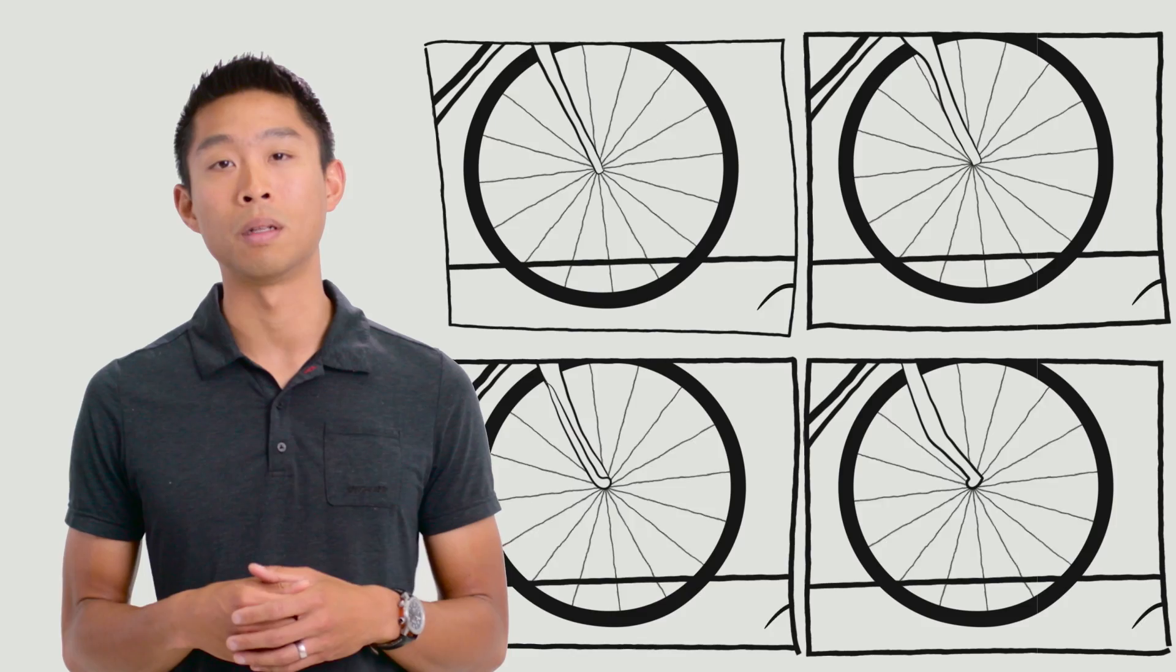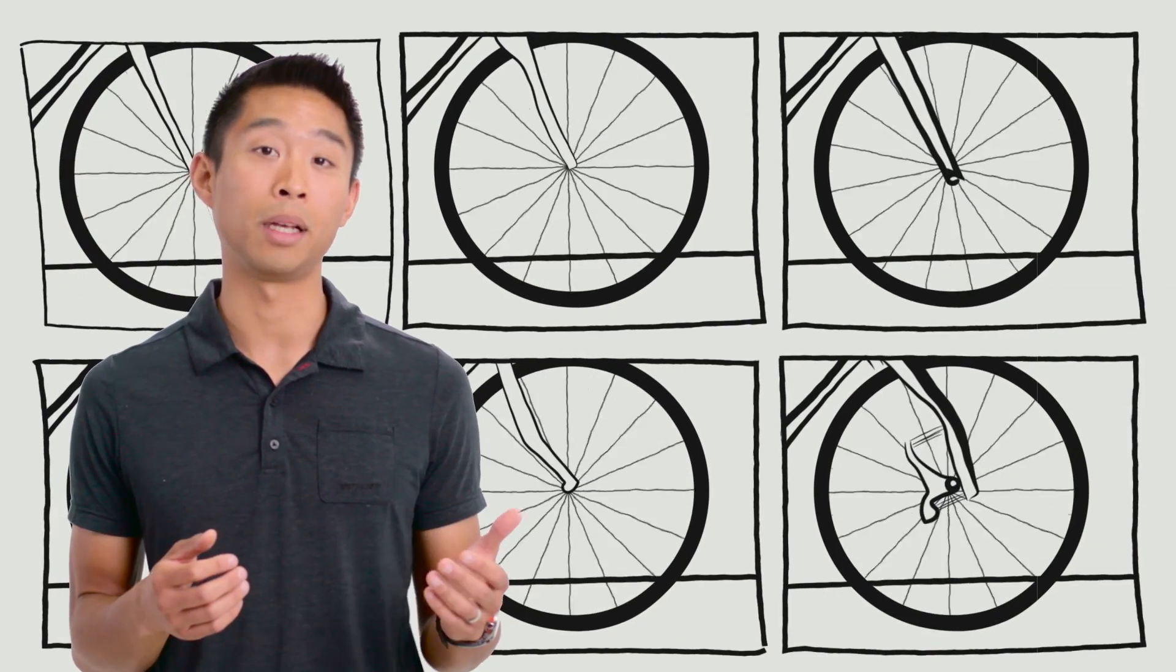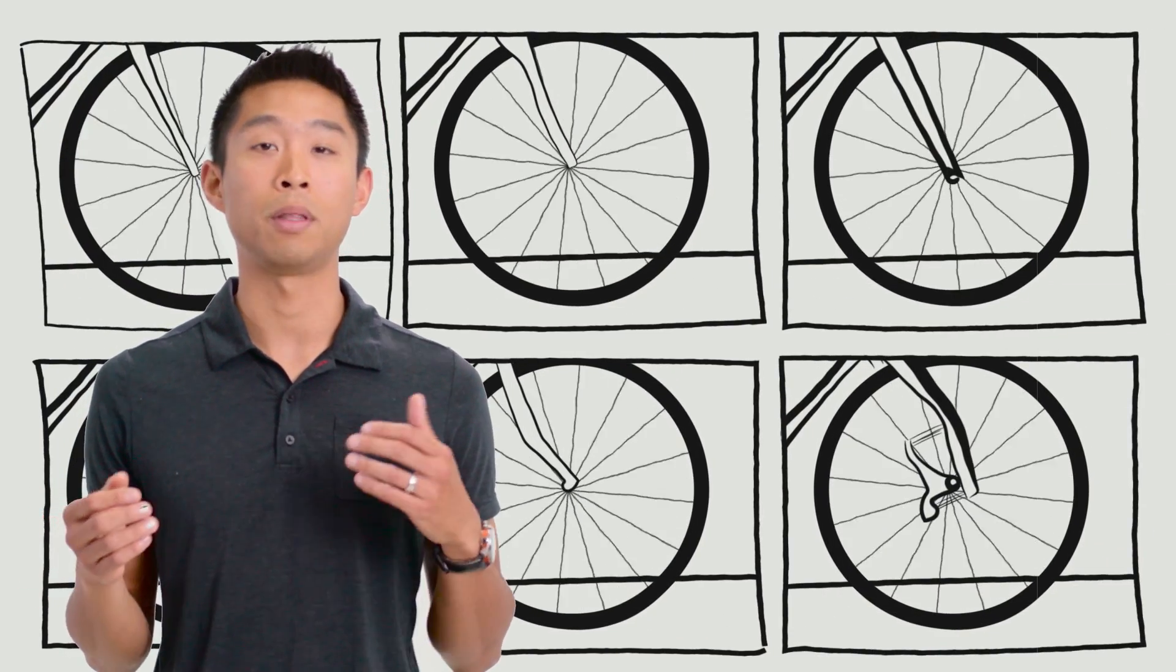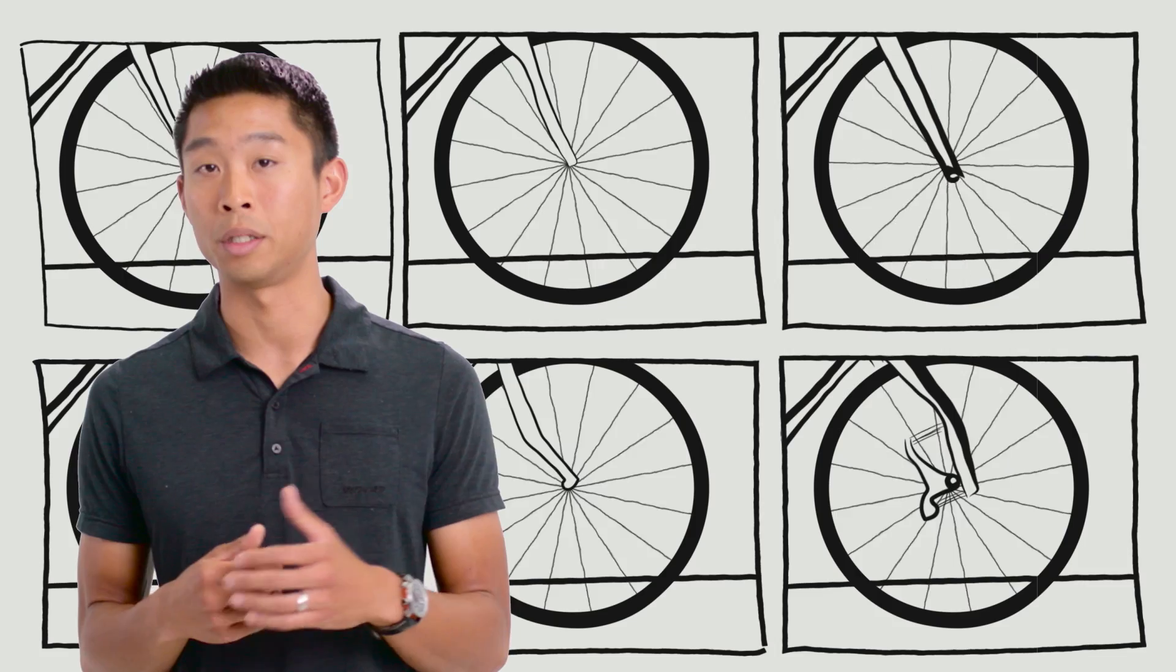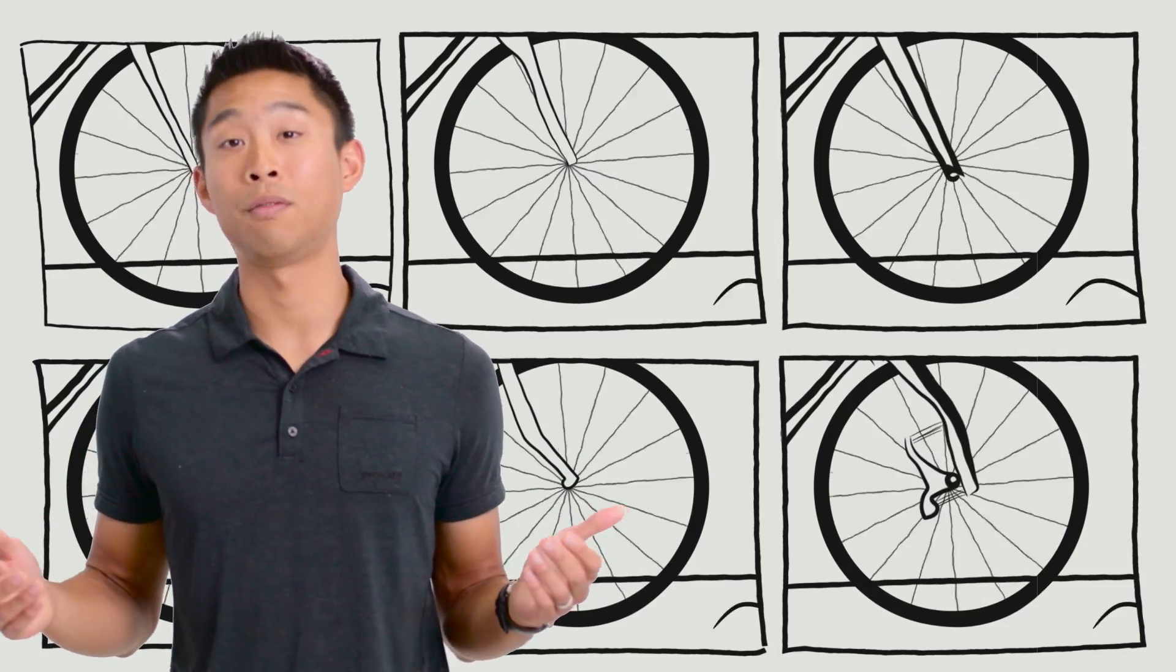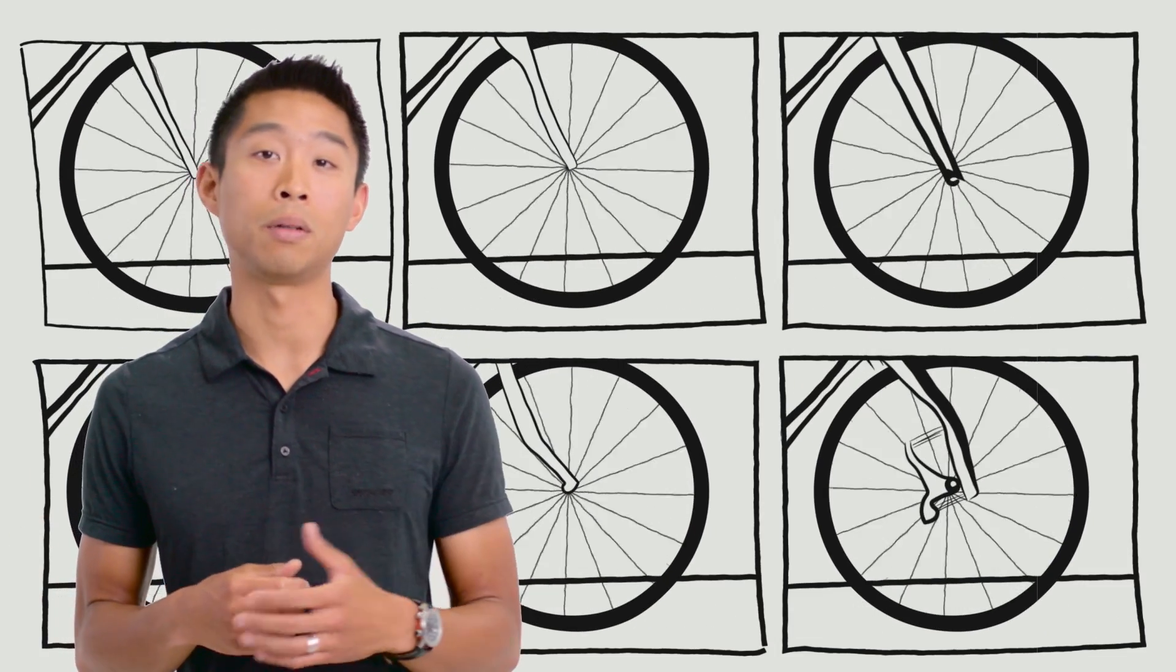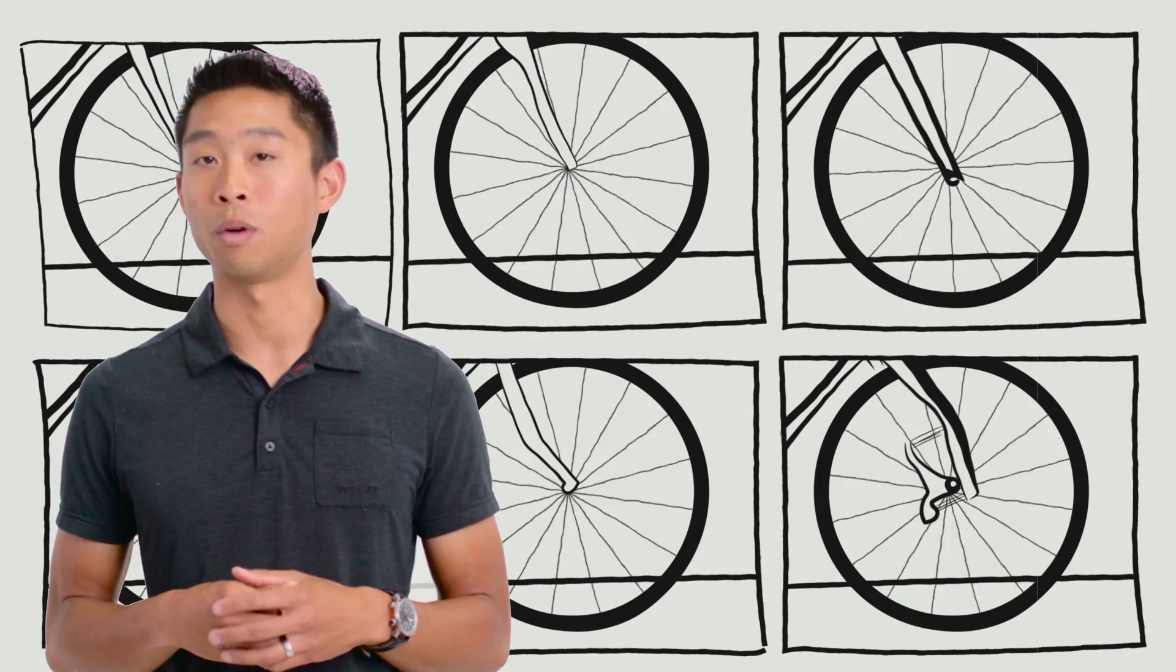For the history of the modern bicycle, adding flex into the fork blades which causes them to bend has been the go-to strategy for absorbing vibrations. But it turns out a flexing fork ends up slowing you down and it isn't a great way to address road vibrations.